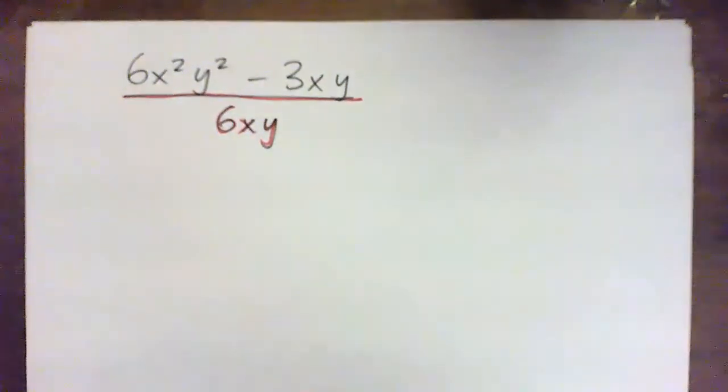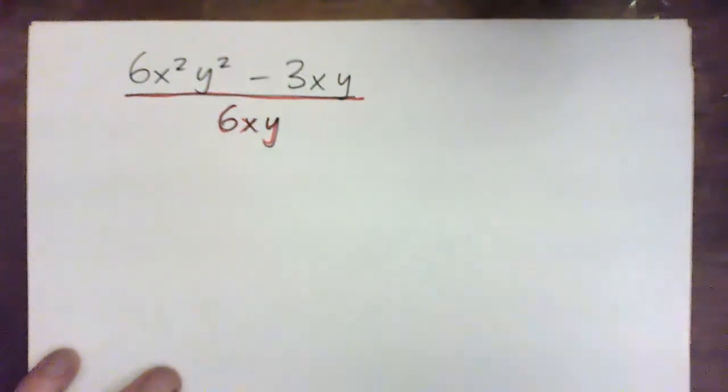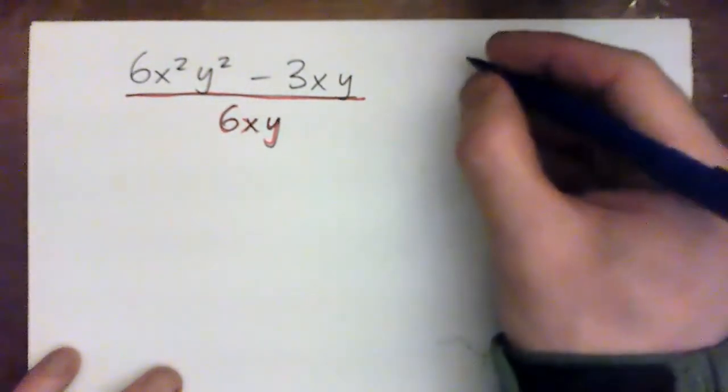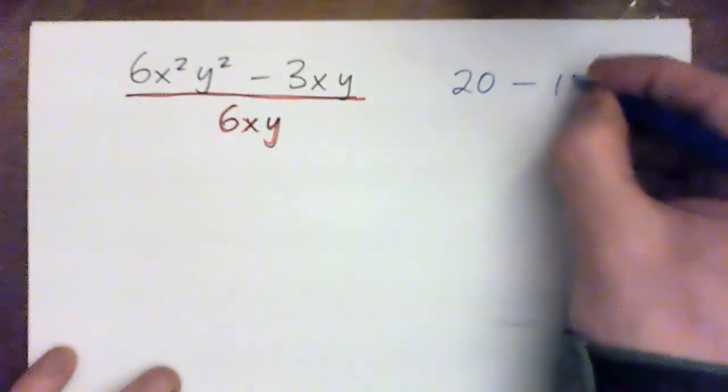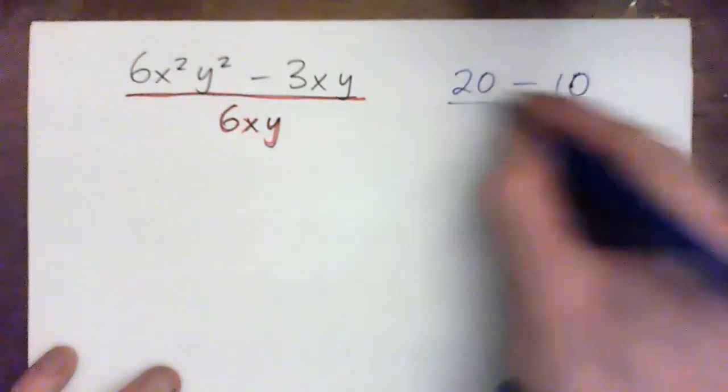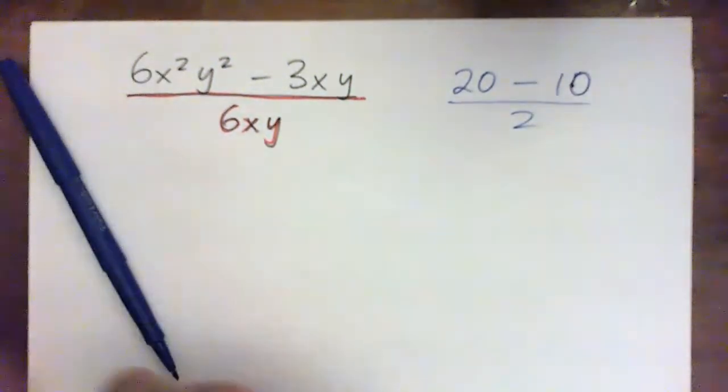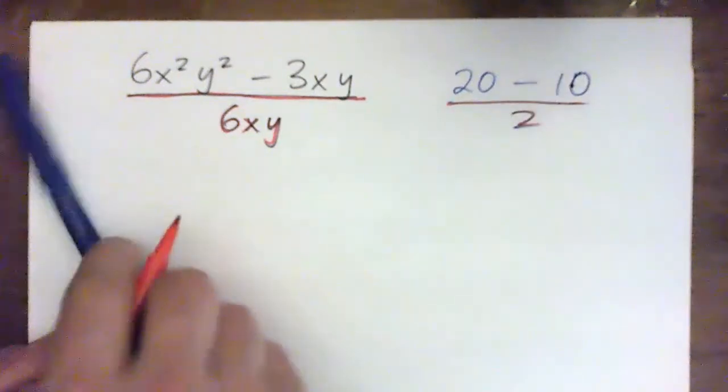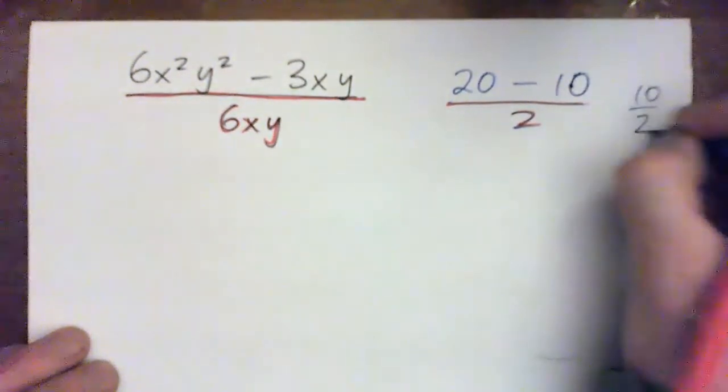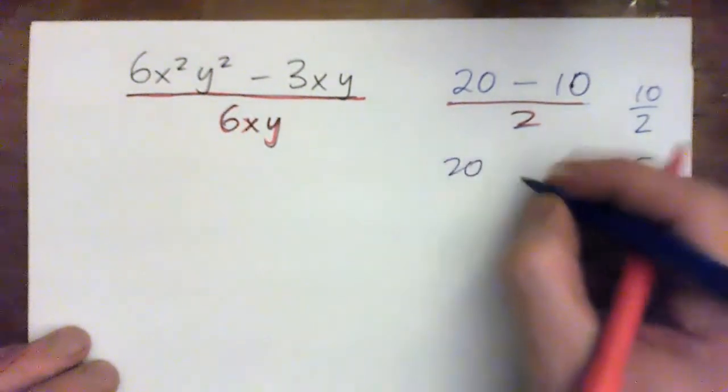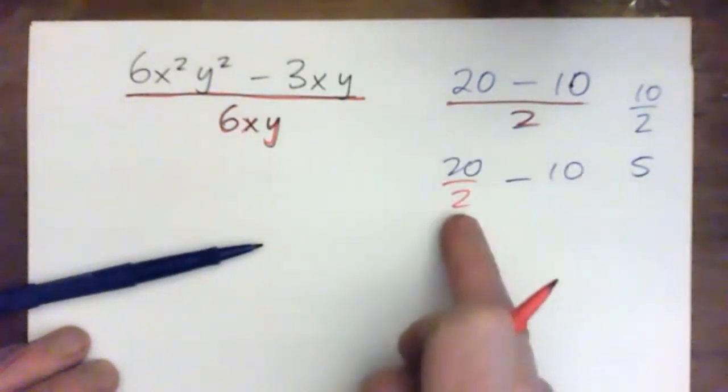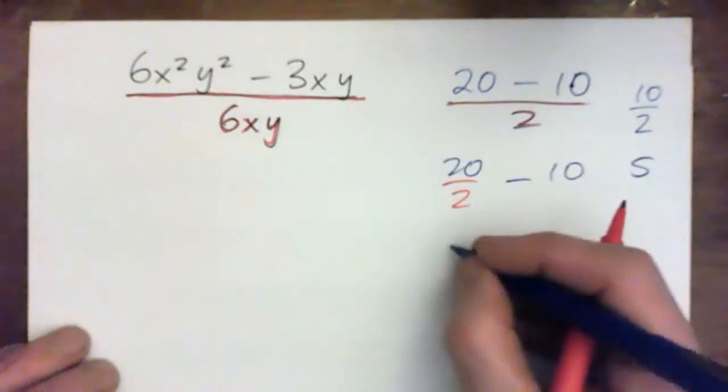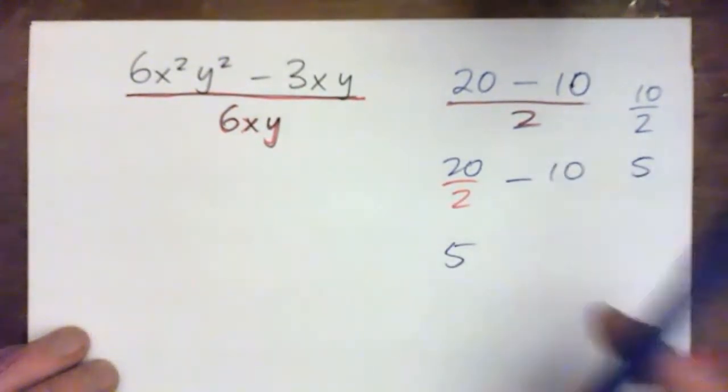I'm just going to put a quick reminder again that if you had something like, let's say you had 20 minus 10 all over 2, you can't just divide the 20. You got to divide both things because this is definitely 10 over 2, which is 5. So you've got to write it as 20 over 2 minus 10 over 2. But you can't just write it as 20 over 2 minus 10, because that would be like 5 minus 10, which is negative 5, which is totally wrong.